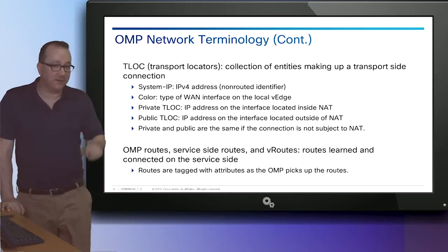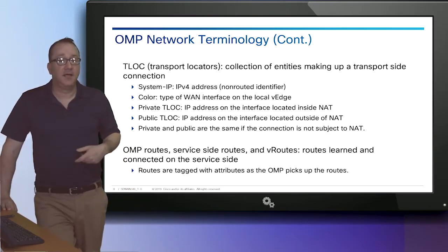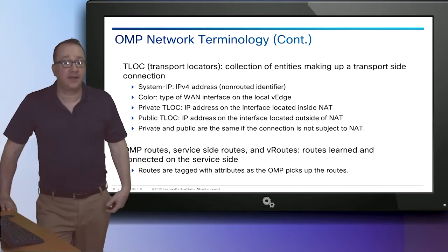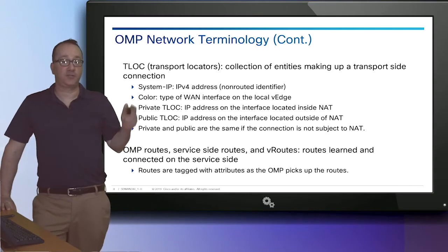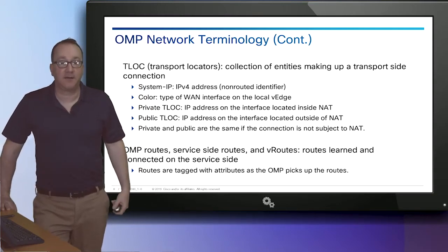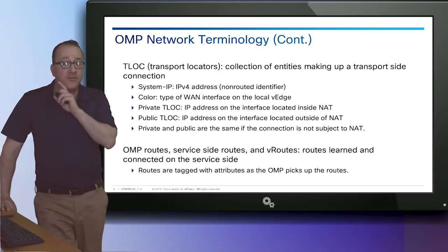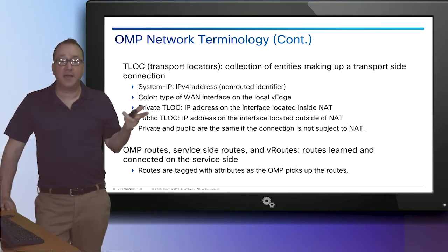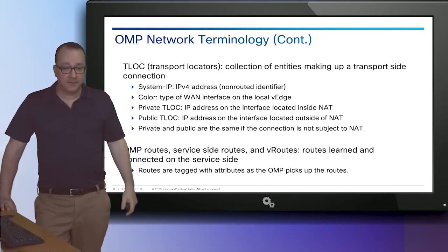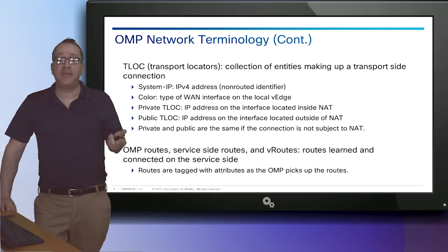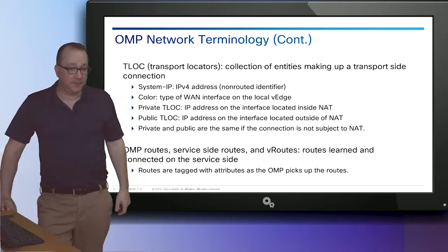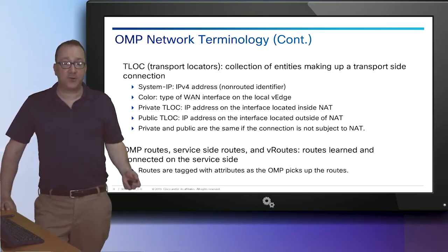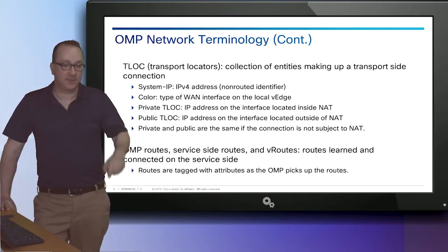The TLOC, or Transport Locator, identifies all the transport locations in the overlay network that connect to physical transports — the point at which a WAN interface connects to a carrier. A TLOC is denoted by a three-tuple: a system IP address (as an OMP speaker), a color, and an encapsulation type. OMP advertises each of these separately. The service-side route advertised into OMP is advertised with these properties.